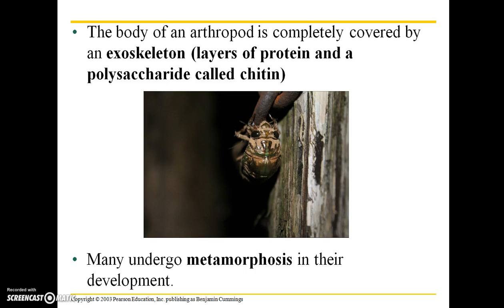The body of an arthropod is completely covered by an exoskeleton, which is made up of layers of protein and a polysaccharide carbohydrate called chitin.